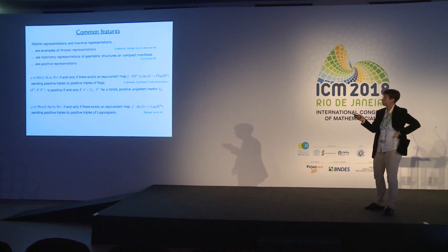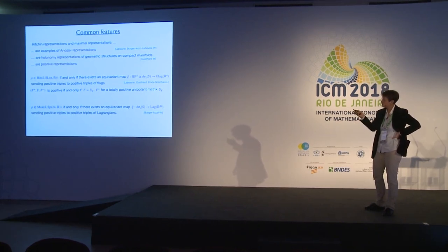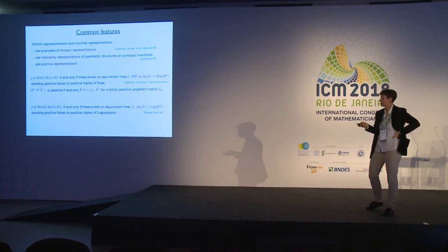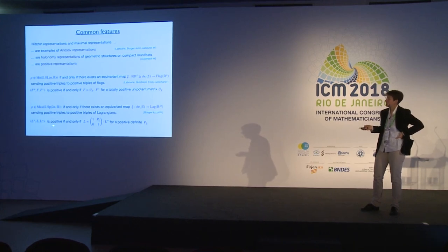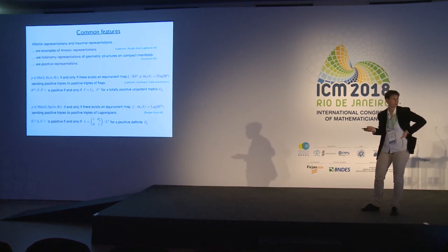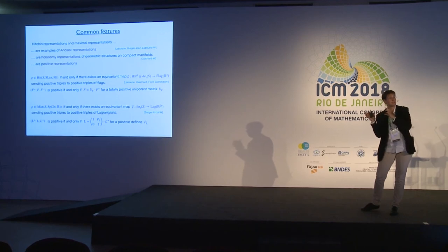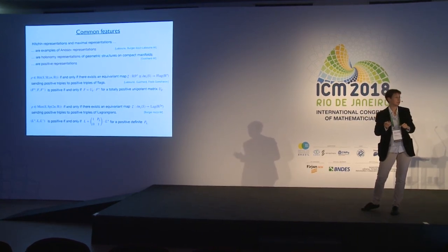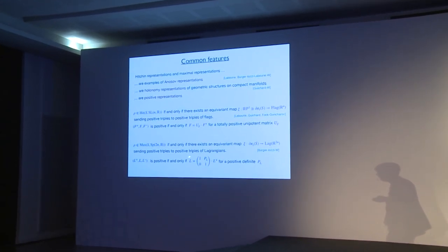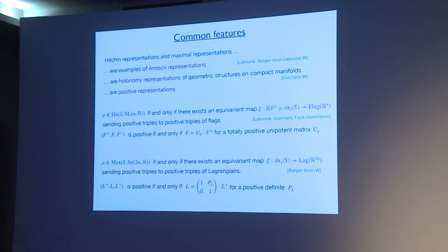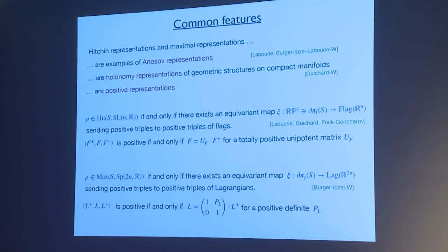A representation is in the Hitchin component if and only if there is a continuous equivariant map from the circle into the flag variety sending positive triples to positive triples of flags. A triple of flags F₊, F₋ is positive if F can be written as a totally positive unipotent matrix times F₊, where a unipotent matrix is totally positive when every allowed minor is positive. Similarly, a maximal representation has a continuous equivariant map from the circle to the space of Lagrangians sending positive triples to positive triples, where L is positive relative to L₊, L₋ if L = image of L₊ under an upper block-triangular matrix with a positive definite symmetric block.